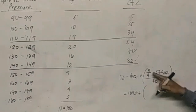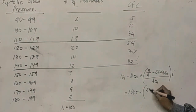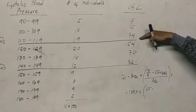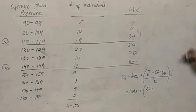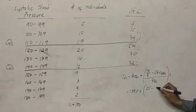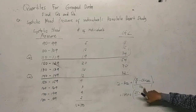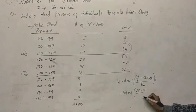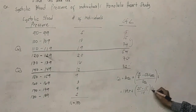Now we substitute all values into the formula. Q1 equals 109.5, plus the quantity n over 4 — which is 25 — minus the cumulative frequency below the Q1 class, which is 15. This gives us 25 minus 15 equals 10. Then over the frequency of Q1, which is 19, times the interval 10.